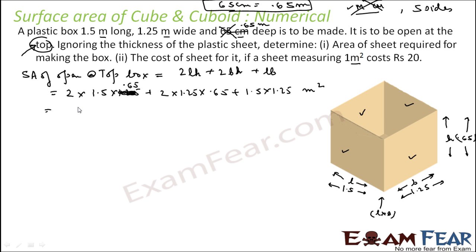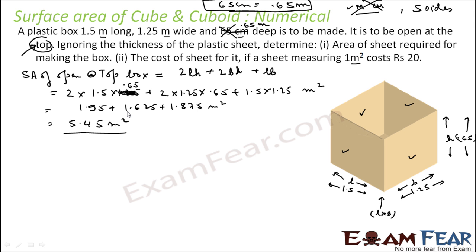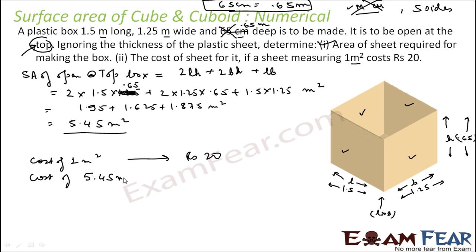Calculating: 2×1.875 = 3.75 (the l×h and b×h terms) plus intermediate values gives a total surface area of 5.45 meter square. That is the area of sheet required for the open-top box. Since the cost of 1 meter square of sheet is 20 rupees, the cost for 5.45 meter square is 5.45 × 20 = 109 rupees.